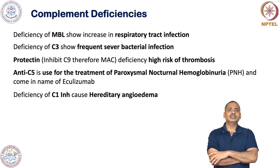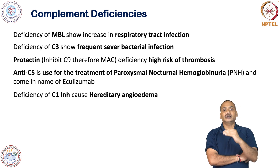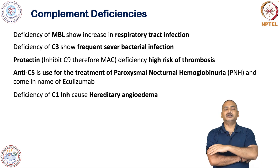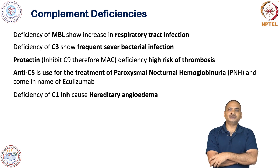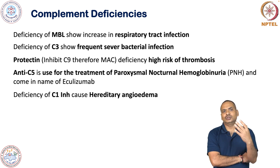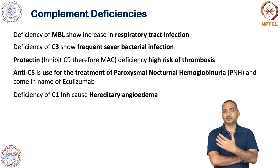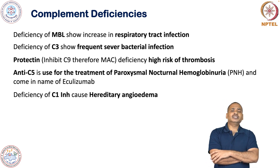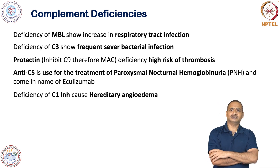Deficiency of C1 inhibitor causes hereditary angioedema. Affected individuals develop spontaneous swelling anywhere in the body, and it is not known exactly what triggers these episodes. Sometimes swelling can result in fatality if it occurs in vital places such as the respiratory tract or gut. With this, I am completing this complement topic and we will discuss another topic in the subsequent session. Thank you.